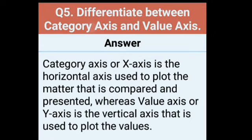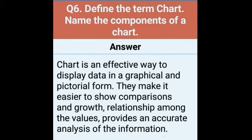Question number 5: differentiate between category axis and value axis. Category axis, or x-axis, is the horizontal axis used to plot the matter that is compared and presented. Chart में जो नीचे वाला horizontal axis होता है उसको category axis या x-axis बोलते हैं. Value axis, or y-axis, is the vertical axis that is used to plot the values. So this is the difference between category axis and value axis.